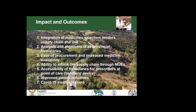The impacts and outcomes include an integration of medicine selection, tenders, supply chain, and use. There was alignment of provincial formularies, which will lead to better procurement as we are now aware of exactly what medicines are being used and the trends for such use. Going forward, we will be able to perform medicine utilization evaluations to better inform the supply chain. We are also working on making these formularies accessible to prescribers at the point of care via mobile handheld devices. During the COVID-19 pandemic, having these processes in place made it easier to incorporate key medicines into formularies as they were being approved for the treatment of COVID-19.